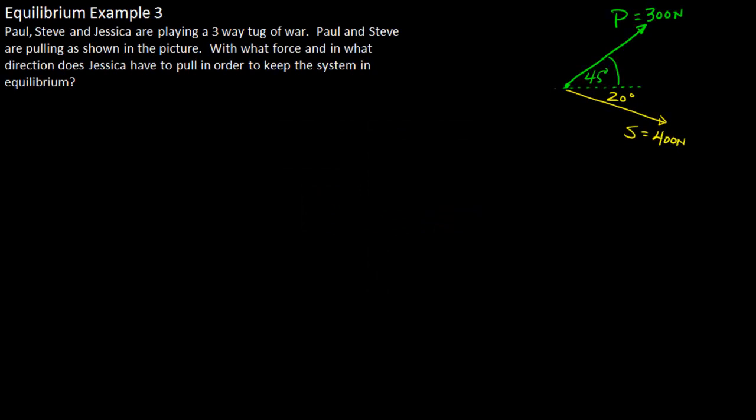In this problem, Paul, Steve and Jessica are playing a three-way tug-of-war. Paul and Steve are pulling as shown in the picture. With what force and in what direction does Jessica have to pull in order to keep the system in equilibrium?